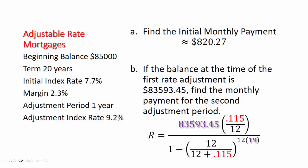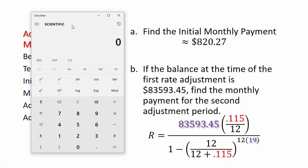And once again, the hard part, plugging into the calculator. So I've pulled up the scientific calculator on my computer again, and I'm going to use the same idea. I'm going to work on the denominator first. So I'm going to divide what's inside the parentheses. I'm going to divide 12 by 12.115 equals.